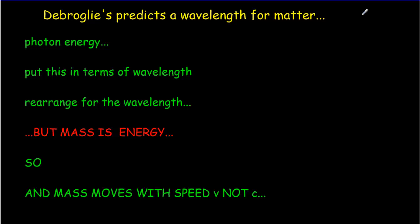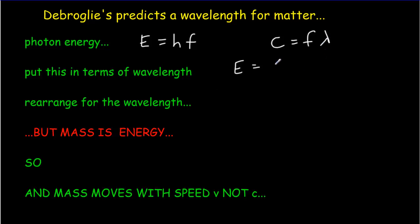If we start with the wave side of the equation, talking about electromagnetic waves, then the particle would be the photon. We know the energy of a photon will be h times the frequency of that radiation. We can write that in terms of wavelength because from the universal wave equation, c equals f times lambda, so photon energy becomes h times c over the wavelength. Rearranging for wavelength, we get h times c divided by the energy of the photon.